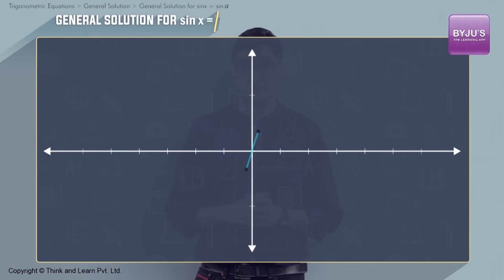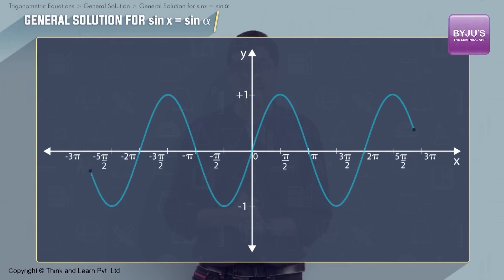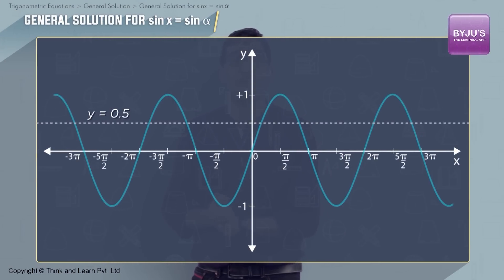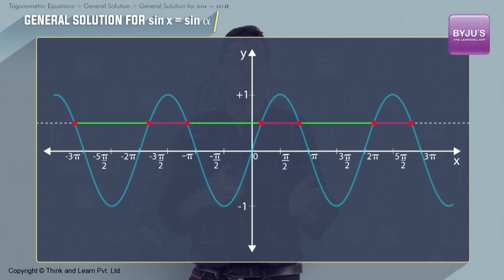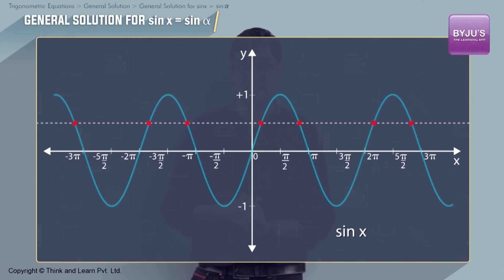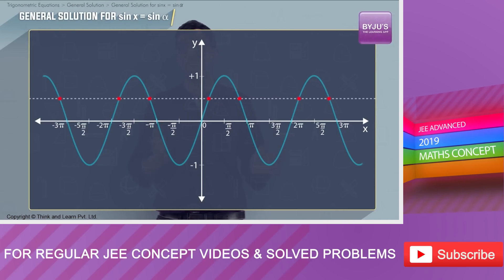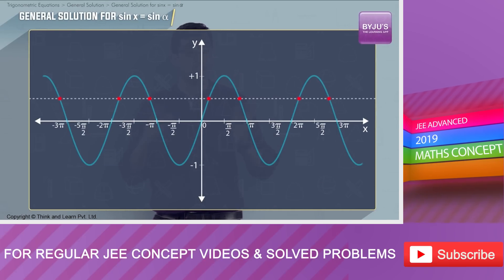Since sin x is periodic, if we extend the graph, we will see that the same line y = 0.5 cuts the graph at various points. You can also see the gap between these points is uniform. All these values where the line intersects the curve are also solutions for sin x = 0.5, but these are not principal solutions. Let's now see how we can represent all these solutions.